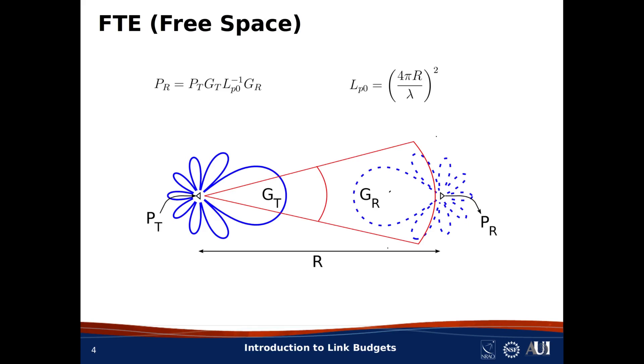The path loss, L_p0, is equal to 4π times distance r, divided by wavelength λ, that quantity squared.